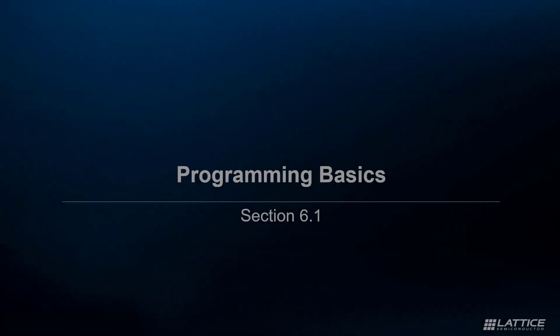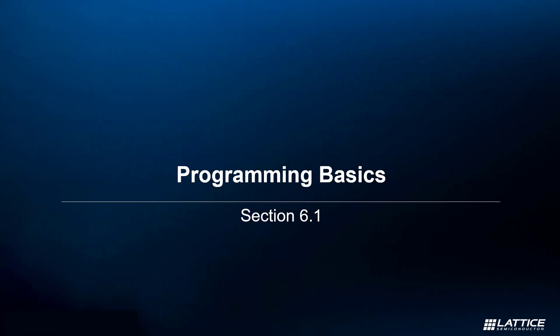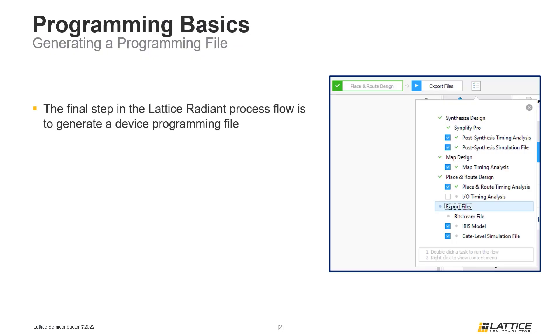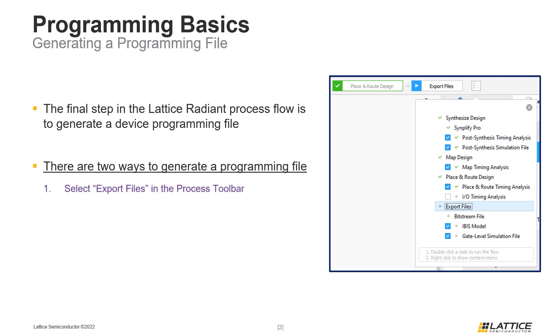Finally, in section four, Debugging with Reveal Analyzer and Controller, we discuss Reveal Analyzer and Controller and how it can be used. Chapter 6, Section 1: Programming Basics. In this section we will be reviewing the basics of device programming using Lattice Radiant. The final step in the Radiant design process flow is to generate a programming file for a project. This file will be used to program the selected device. There are two ways a programming file can be generated after a project's implementation has completed place and route. The first way is to click the Export Files button from Radiant's process toolbar.